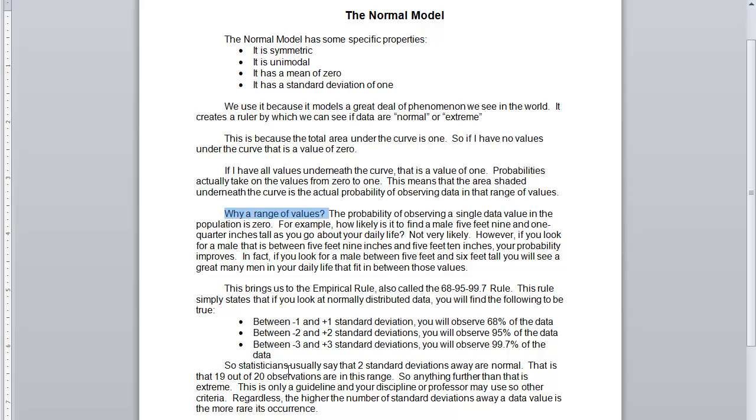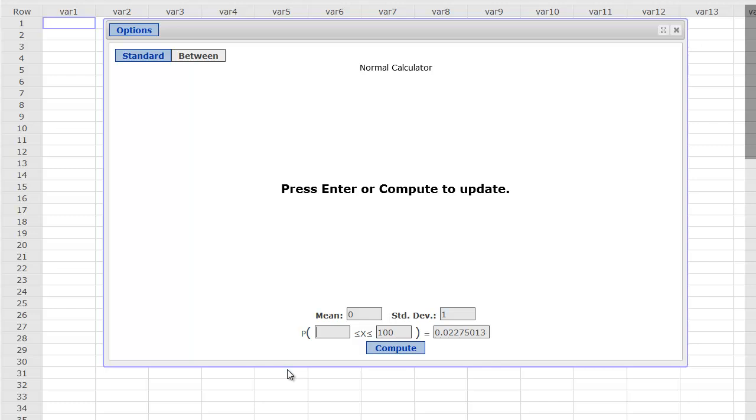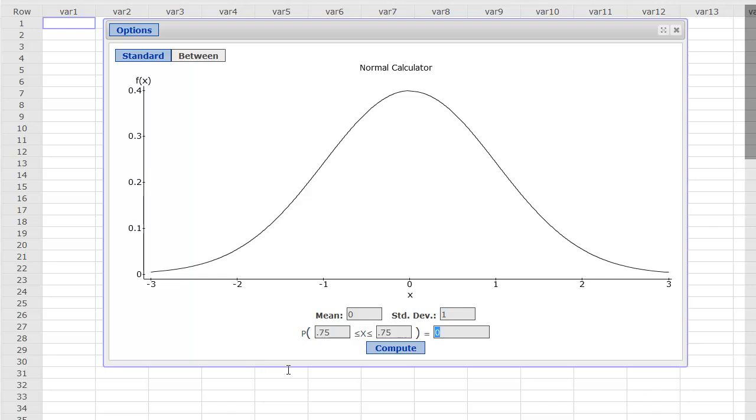Why a range of values? Well, it turns out that the probability of observing a single data value in the population is actually 0. For example, how likely is it to find a male 5'9¼ inches tall as you go about your daily life? You're walking around with this 5'9¼ inches tall ruler, and anybody who is slightly shorter doesn't count. Anybody who's slightly taller doesn't count. The chances of you finding that person are just not very likely. As I go to my normal calculator here, that's about a standard deviation of maybe 0.75. If I'm looking for exactly that and no other value, just that one particular value, I'm going to get a probability of 0. The likelihood of finding that is basically none.